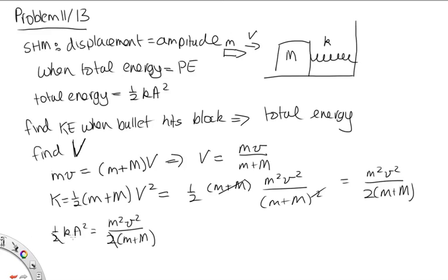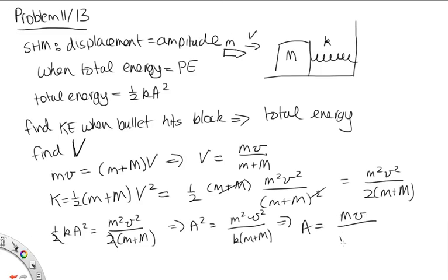The factors of two cancel, giving A² = m²v² / [k(m + M)]. Taking the square root, the amplitude A = mv / √[k(m + M)]. And that's our answer.